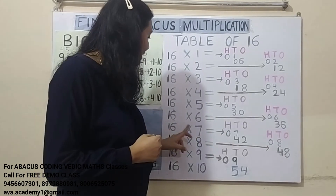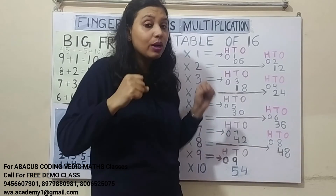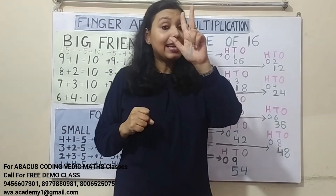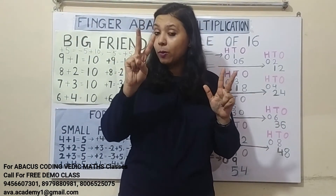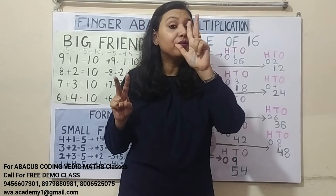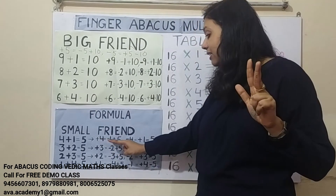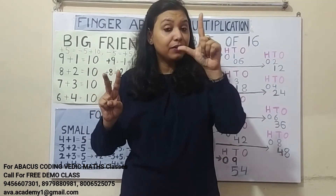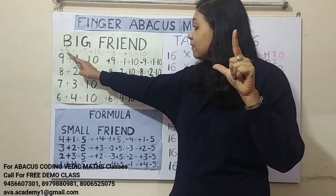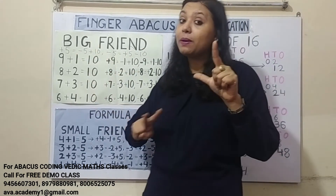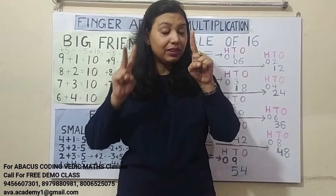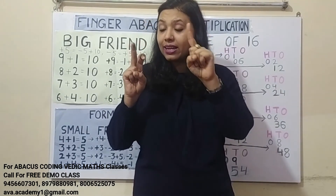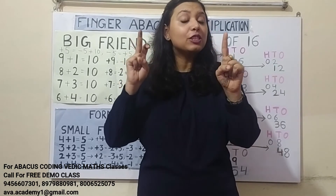16 sevens are: 1 sevens are 7 — in 100's we represent 0, in 10's we represent 7. 6 sevens are 42 — in 10's we represent 40, and in 1's we represent 2. We can add 2, but to add 40: plus 4's formula is minus 1 plus 5, so plus 40's formula is minus 10 plus 50. But 50 we cannot add directly, so plus 5's formula is minus 5 plus 10, meaning plus 50's formula is minus 50 plus 100. So the answer is 112: in 100's it's 1, in 10's it's 1, and in 1's it's 2.